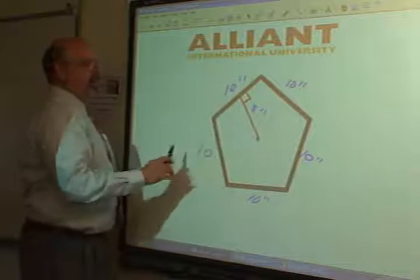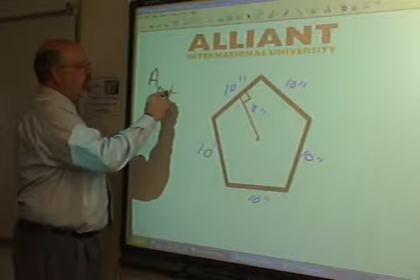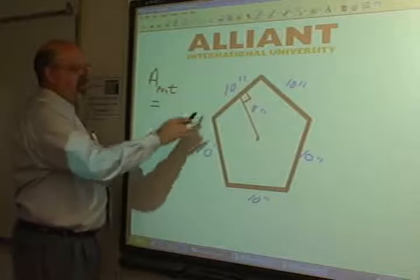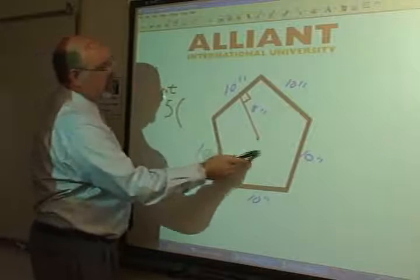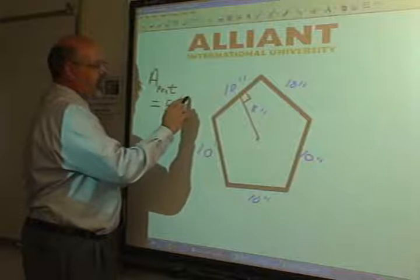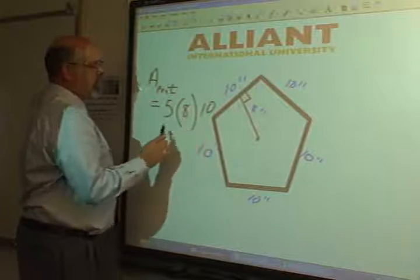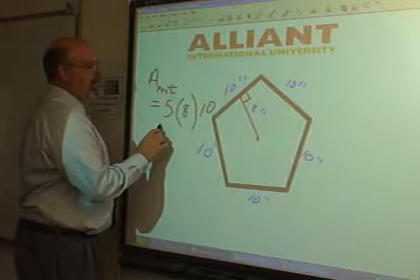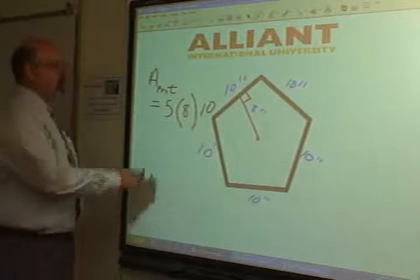To find the area, the area of the pentagram, it's going to be the number of sides, five, times the apothem, the length of the apothem, times the length of this side, and you've got to divide all that by nothing. You're done. That's it. That's your answer. Okay.